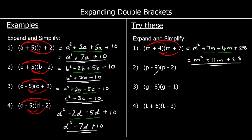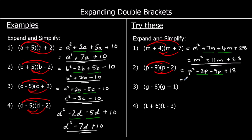For the second one, both terms in the first bracket times both terms in the second bracket. p times p makes p squared. p times negative two is negative 2p. Negative nine times p is negative 9p. And negative nine times negative two — negative times negative is positive — and nine times two is 18. Collecting like terms: negative 2 take away 9 is negative 11, so we've got p squared minus 11p plus 18.